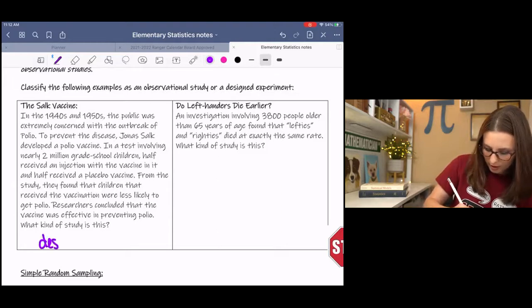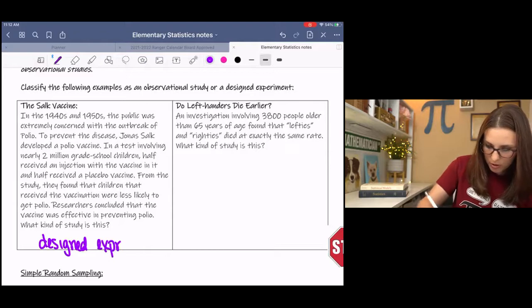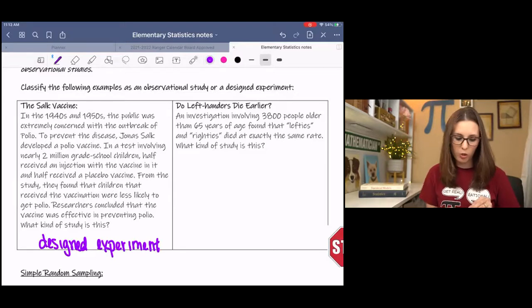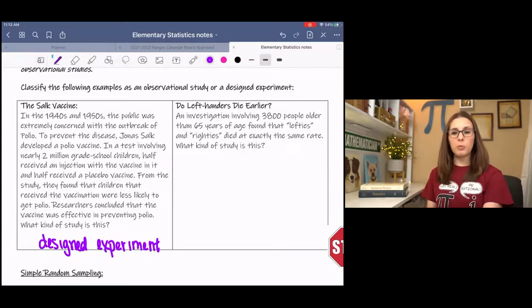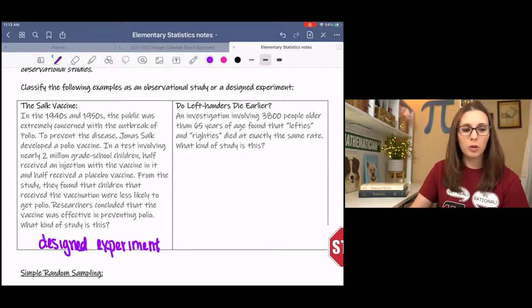This is a designed experiment. Where the population would have been all the children in the world. And the sample would be the 2 million grade school children that got the vaccine.